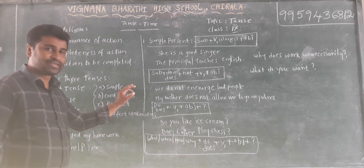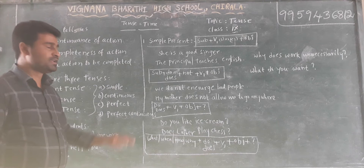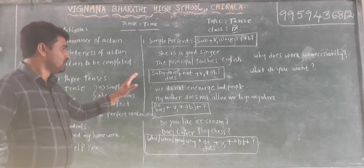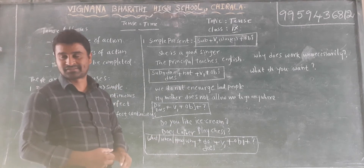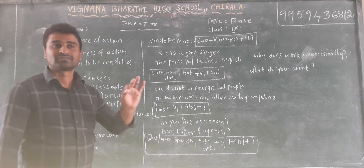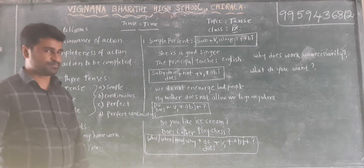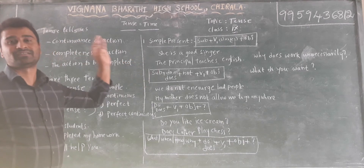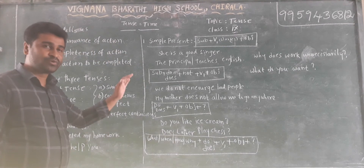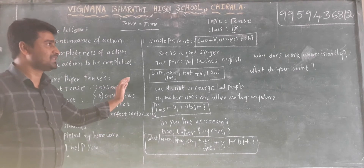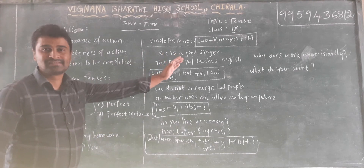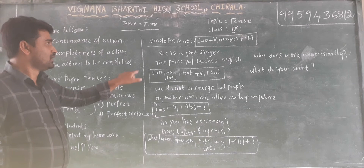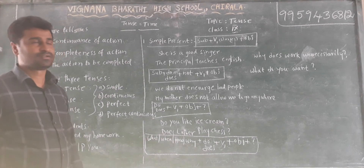Without knowing tense, we cannot make any sentence — we cannot write a sentence, or we may write different types of sentences. But there should be a verb in a sentence, and the verb tells about the time of action or the tense of the sentence. By looking at the verb only, we can know what tense the sentence is in. Today, let us go with the topic tense.